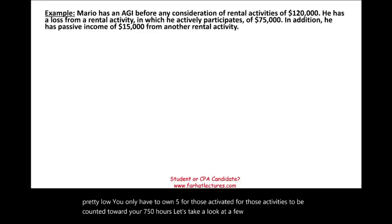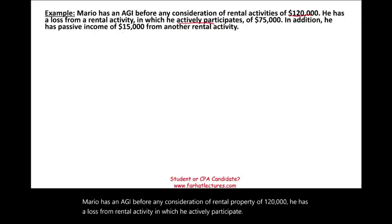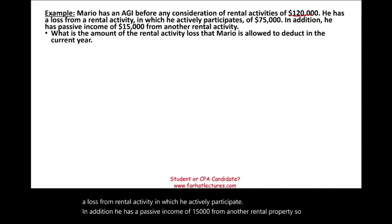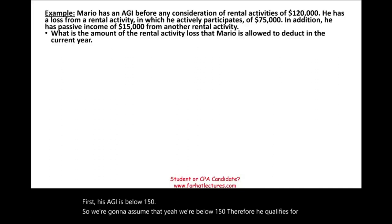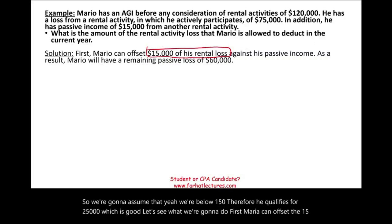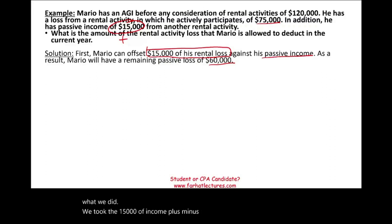Example: Mario has AGI of $120,000 before any consideration of rental property. He has a loss of $75,000 from a rental activity in which he actively participates, and passive income of $15,000 from another rental property. First, Mario can offset the $15,000 of rental loss against the passive income, since they are both considered passive. We're left with a remaining passive loss of $60,000 (i.e., $15,000 income minus $75,000 losses). Since Mario is actively engaged in rental activity, he's eligible for the mom and pop exception.